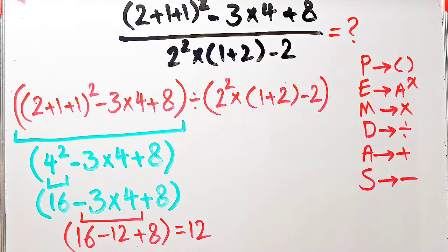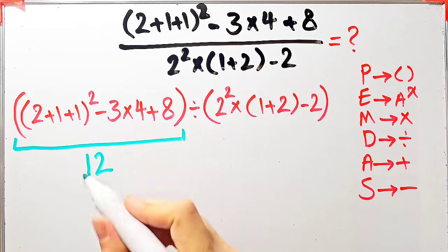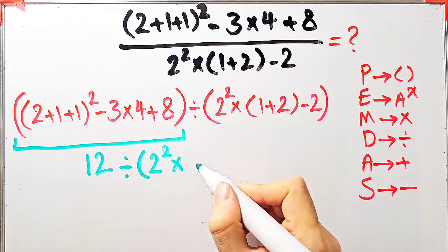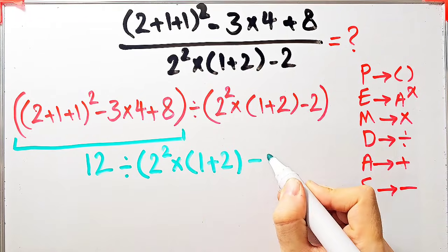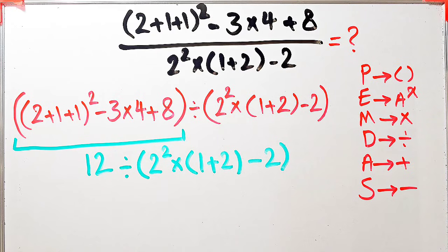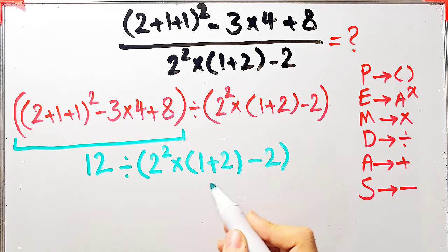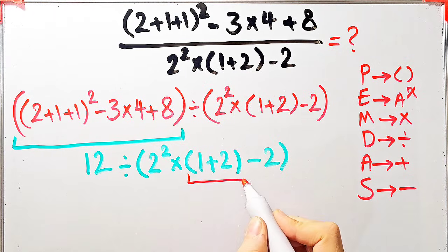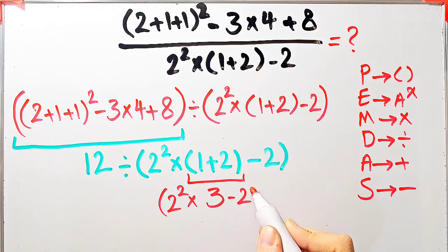Now the question is 12 divided by: 2 to the power of 2, times open parenthesis 1 plus 2 close parenthesis, minus 2. We simplify the inner parenthesis first: 1 plus 2 equals 3. Now inside the denominator parenthesis we have 2 to the power of 2 times 3, then minus 2.